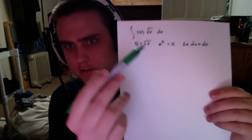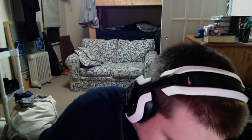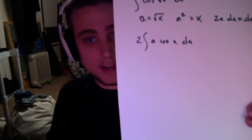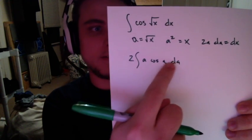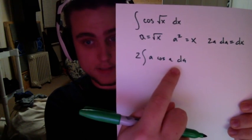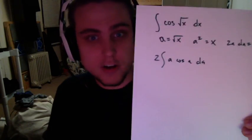If we were trying to do just a standard u-substitution on that square root of x, we wouldn't be able to integrate this, because as you can see, if we substitute a in there, we now have 2 times the integral of a times cosine a da. We have two separate functions being multiplied by each other, so we can't integrate this yet — we have to break it apart. So we're going to use the tactic called integration by parts.